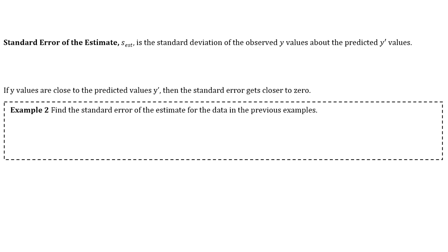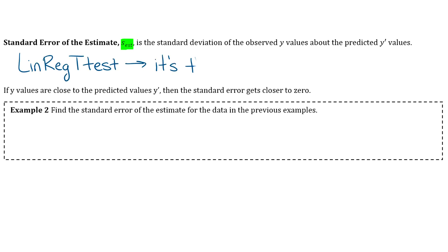We have one more measurement before we get to the prediction interval: the standard error of the estimate, symbolized as a lowercase s with an 'est' subscript. It's the standard deviation of the observed y values about the predicted y-prime values. This will just be a value your calculator gives you — go to linear regression t-test and it's the lowercase s there. The closer the y values are to the predicted y values, the closer the standard error gets to zero, and closer to zero is better.